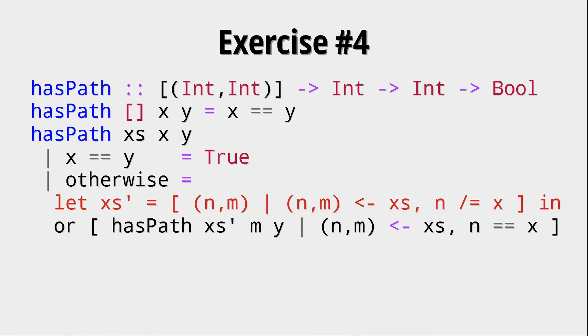First we prepare a new list of edges called XS prime. XS prime is defined as the following: it's all the tuples from XS where n does not equal x. So what are we doing here? We are looking at all the reachable nodes going from x. We have to delete all of the edges we just took. We do this so that if there are any cycles in the graph this wouldn't be a problem.